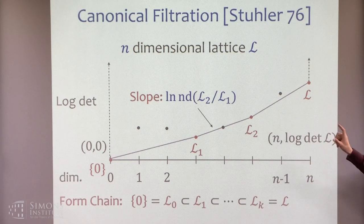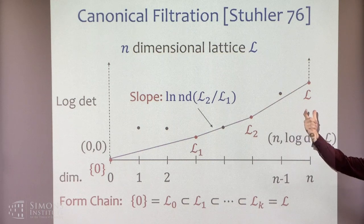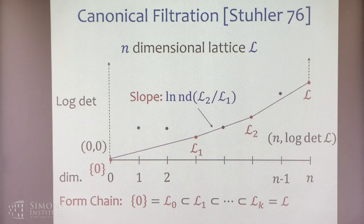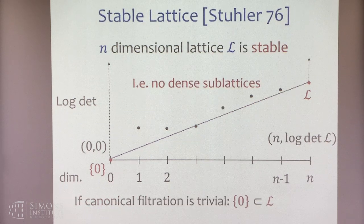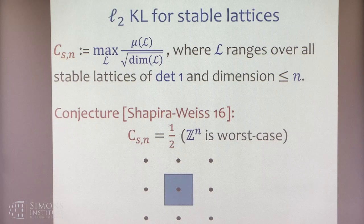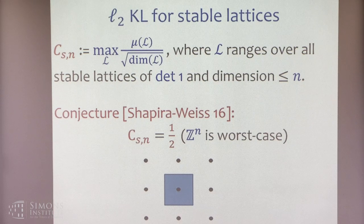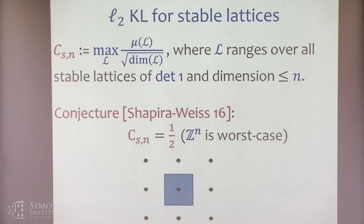Stable lattices and the canonical filtration allow us to reduce all the analysis associated with this Kannan-Lovász conjecture to the set of stable lattices. The blocks we saw before are our little stable pieces. What's very important about these blocks is that if you restrict to a stable lattice, the lower bound is trivially maximized on the full lattice — there's no reason to project. For a stable lattice normalized to have determinant one, the only lower bound you get is square root of the dimension.